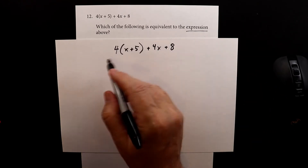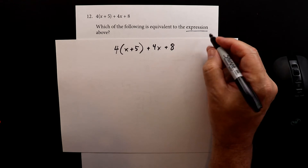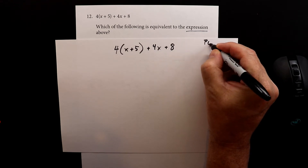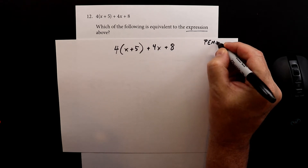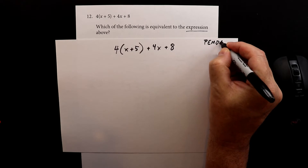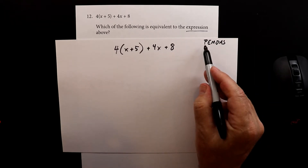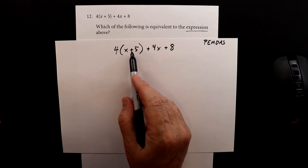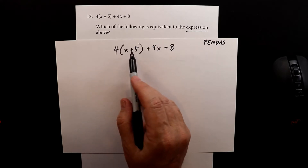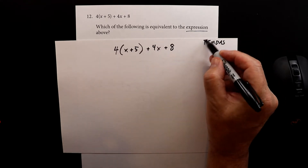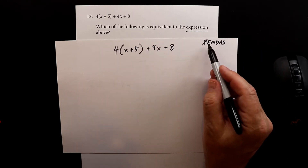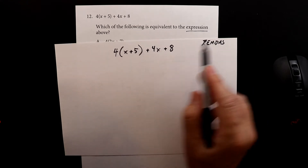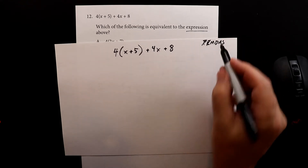We're going to use PEMDAS, just to do a little review. The first thing we want to look at is the parentheses. Now x plus 5 — you can't do anything with that, so that one goes away. We don't have anything with an exponent on it, so that goes away too.